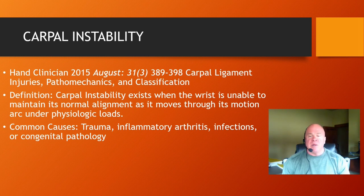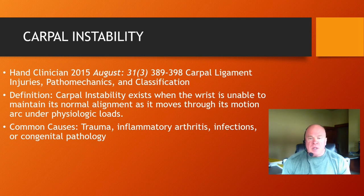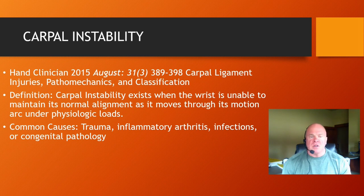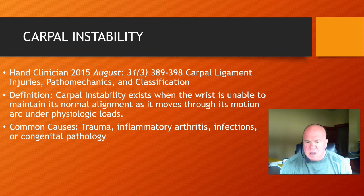As the wrist goes through those movements, there is a predictable carpal response and predictable carpal alignment of the proximal row, the carpal row, and their relationship to the radius and ulna. When there's damage or injury to the carpal ligaments, the wrist is unable to maintain its normal alignment, and this is the cause and source of symptoms that examinees will describe. Common causes of carpal instability include trauma — which is what we'll be concerned with as qualified medical evaluators — also inflammatory arthritis, infections, and congenital pathology.